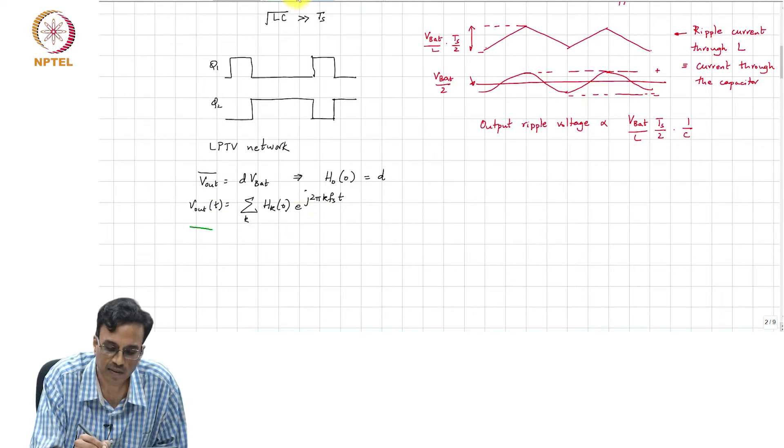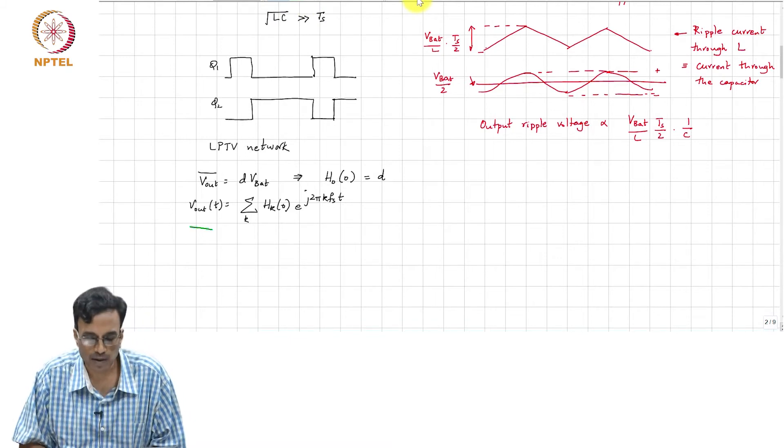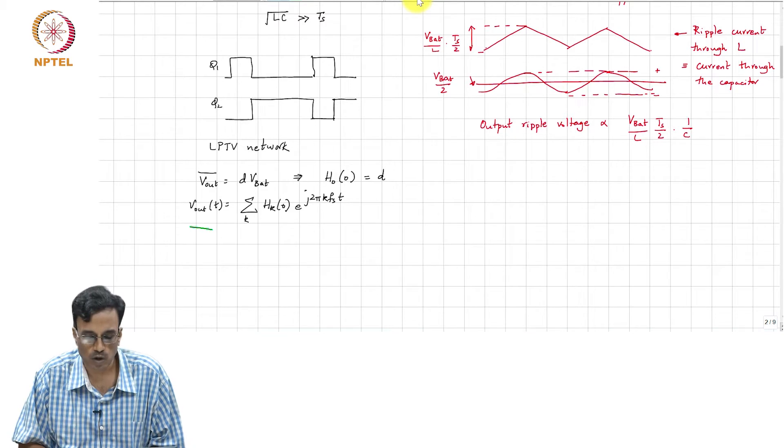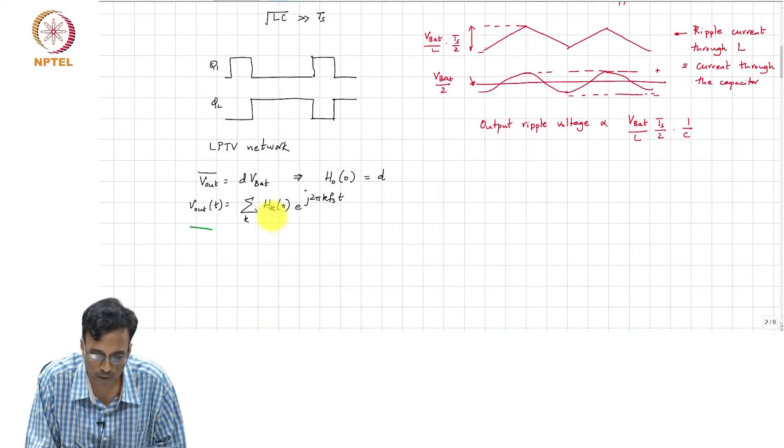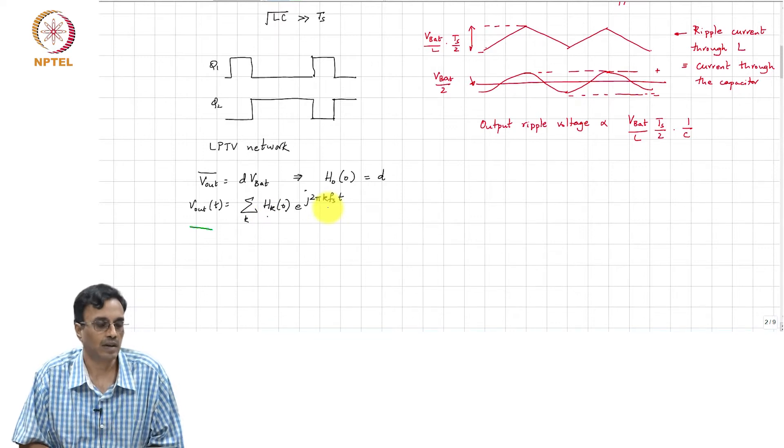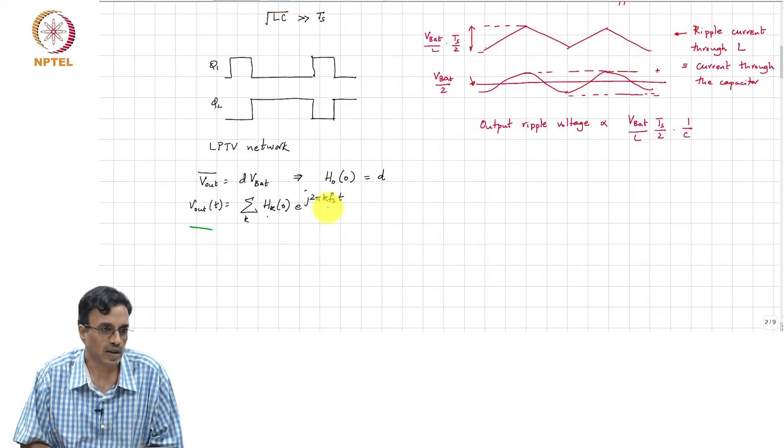Now, the question is, if we apply the N-path principle, then as we saw over the last couple of classes, several of these components basically get eliminated because of cancellation. As a result, you have fewer of these components and therefore you should expect the ripple to be smaller.